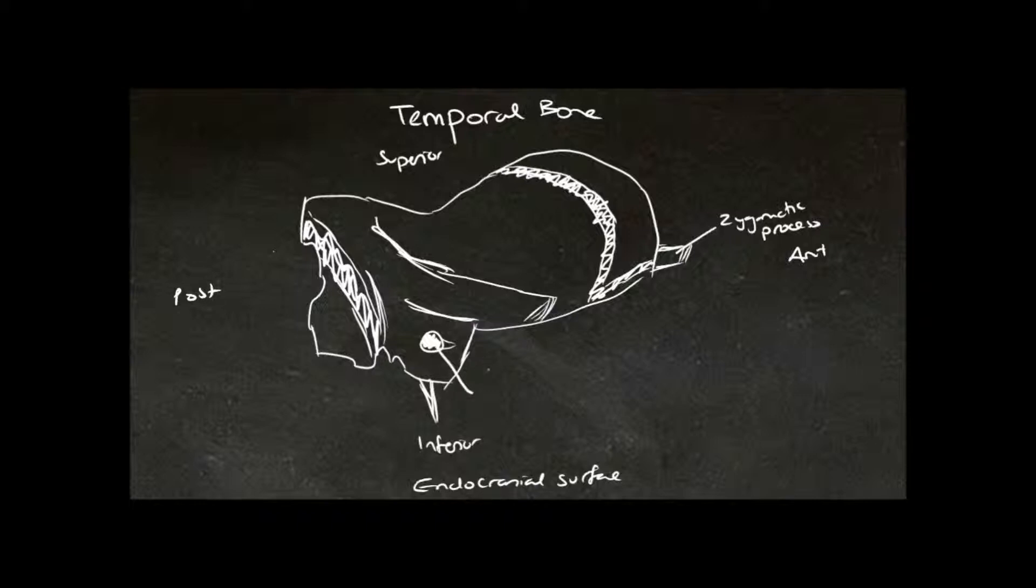Here is the internal auditory meatus, and this is lying in the part of the temporal bone referred to as the petrous temporal bone. And petrous means rock-like, so this is the rock-like part of the temporal bone.